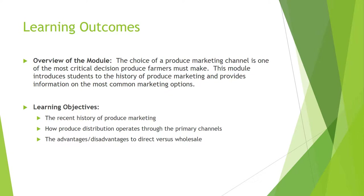Learning outcomes overview: the module covers choice of produce marketing channels, one of the most critical decisions produce farmers must make. This is true for any business. This module introduces students to the history of produce marketing and provides information on the most common marketing options and learning objectives.